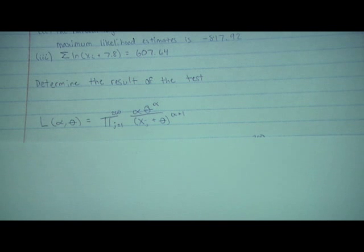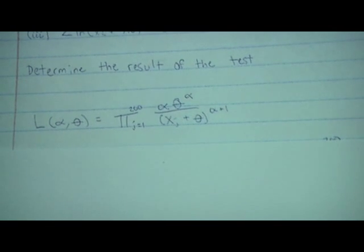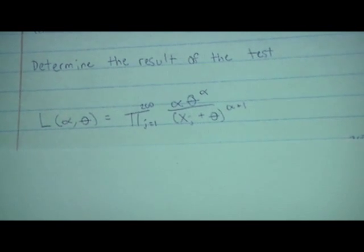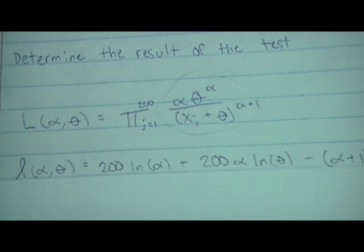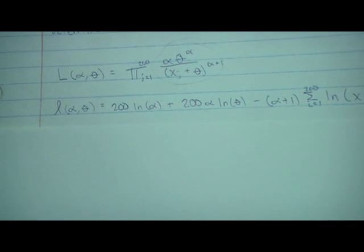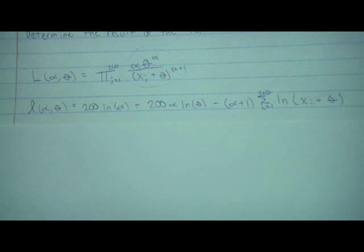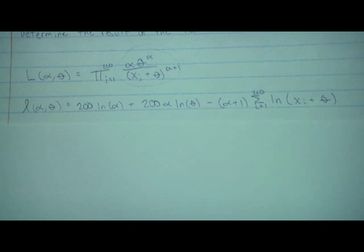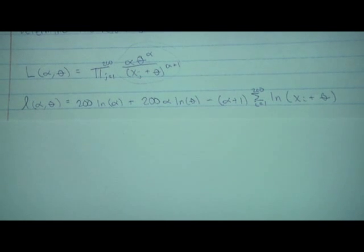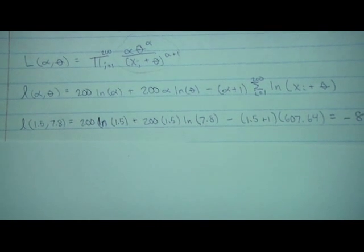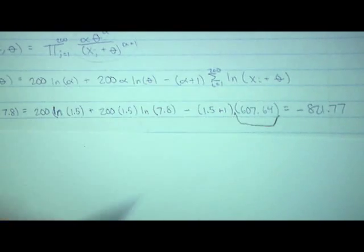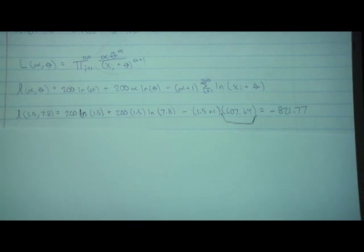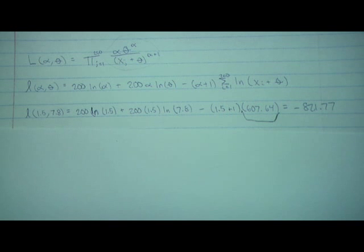The likelihood function is the product from j=1 to 200 of alpha times theta to the alpha over (x_j + theta) to the alpha plus 1, which is the density of a two-parameter Pareto distribution. Taking the natural log gives: 200 ln(alpha) + 200 alpha ln(theta) minus (alpha+1) times the sum of ln(x_i + theta). Plugging in alpha equals 1.5 and theta equals 7.8, using 607.64, evaluates to negative 821.77.